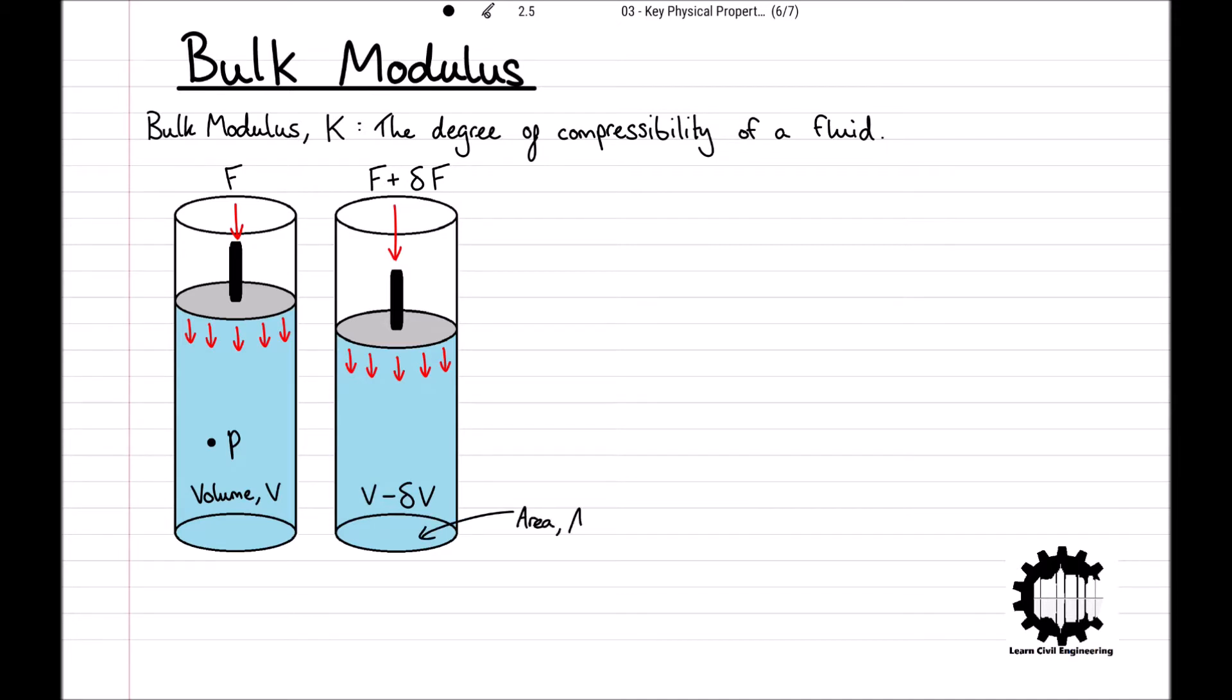If the piston has a cross-sectional area A, the increase in force change in F gives rise to a uniform increase in pressure, where change in pressure is equal to change in force over area, throughout the entire fluid. This is known as Pascal's principle. That is, the change, the increase in pressure, occurs equally at all points within the fluid volume.